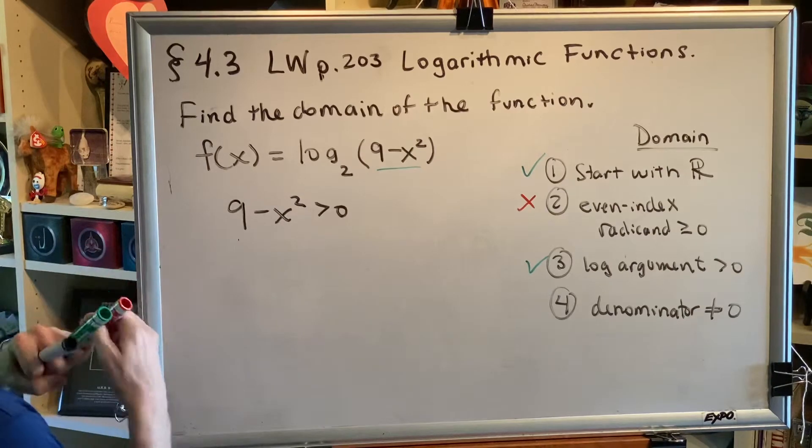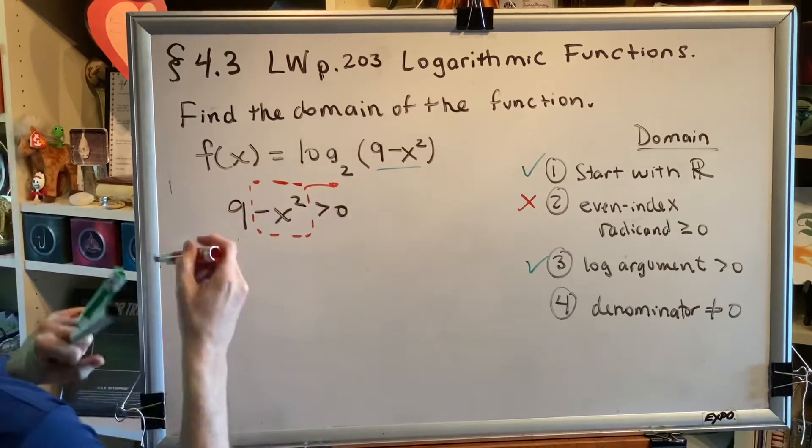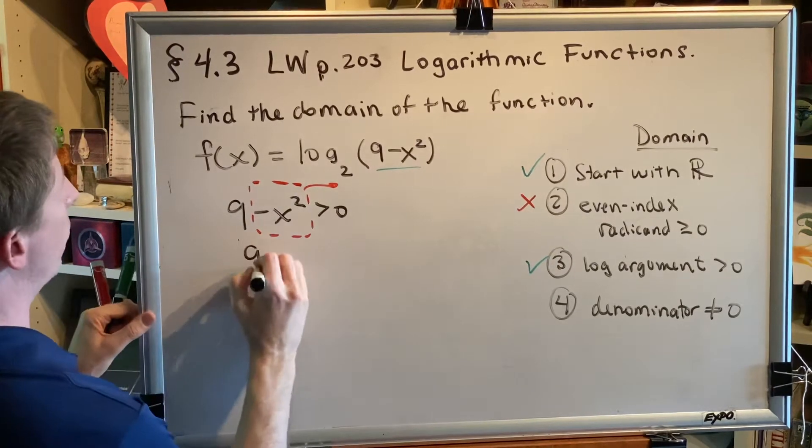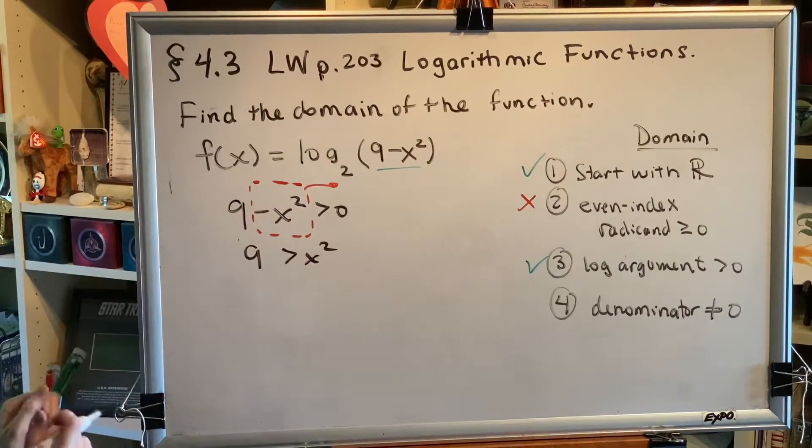I'm going to pick up this term right here, the subtract x squared, and I'm going to move it to the other side. When a term changes sides, it changes signs. So then I have 9 is greater than x squared. Then I'm going to swap the two sides of my inequality.